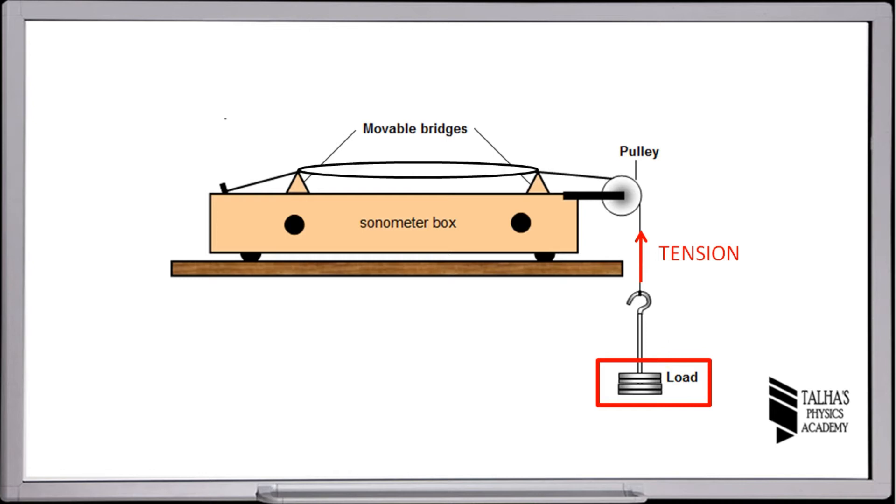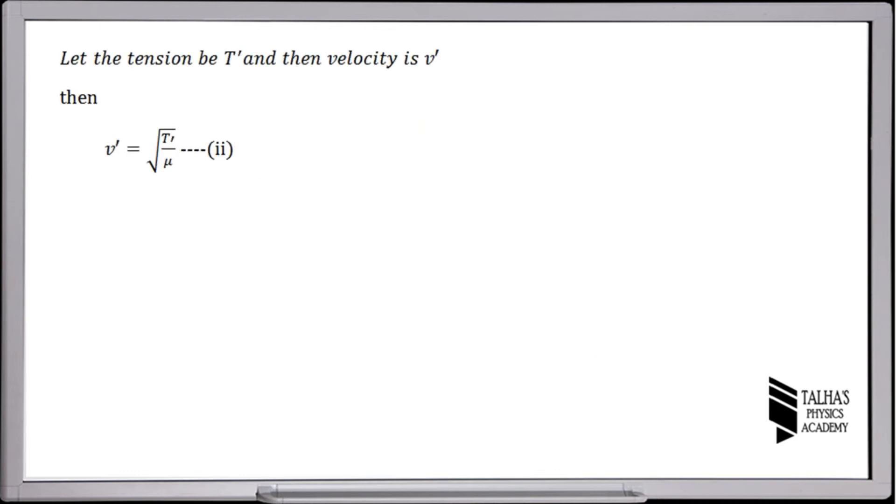Now, we increase the load. We double the load, which will double the tension which is present in the string, due to which the velocity of the stationary wave changes. But how much? We will see in this equation.